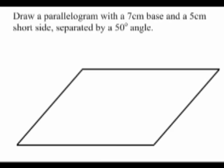All that's left to do now is to label the parallelogram. I will label everything that was given to me in my instructions. So I'm going to put a 5cm label along the short side, a 7cm label on the base, and a 50 degree angle label on the angle.